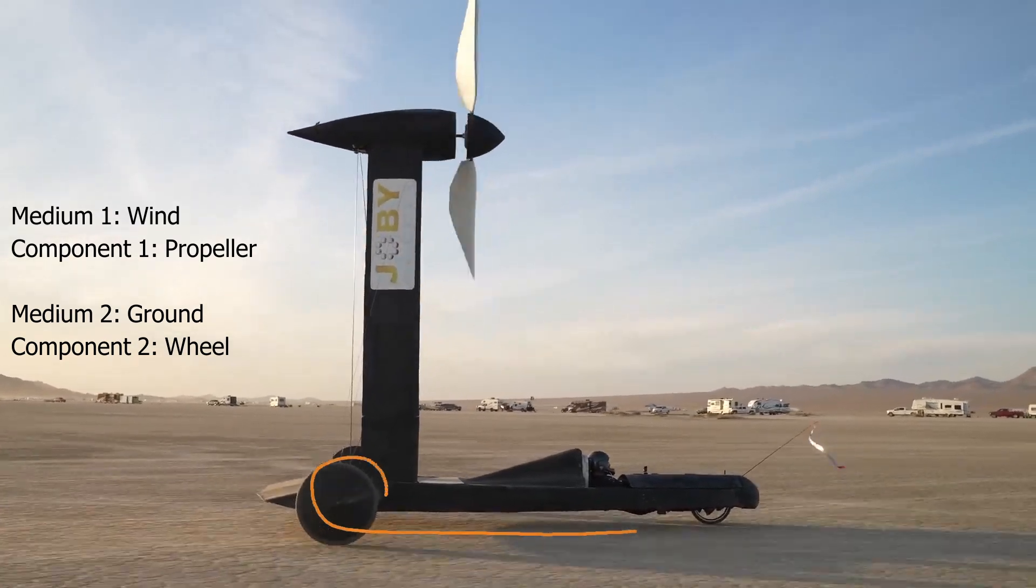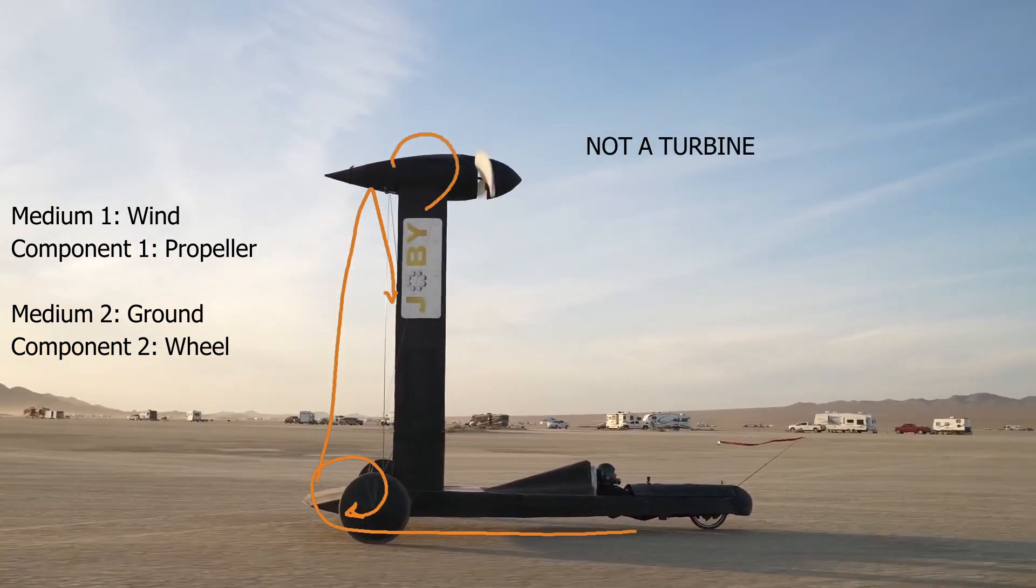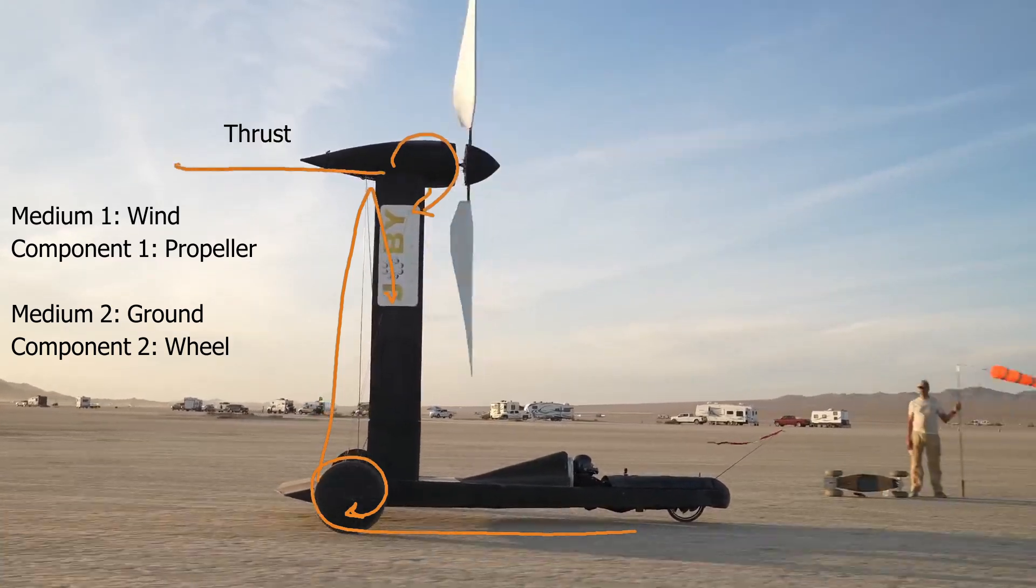Here the wheels interface with the ground and the propeller interfaces with the wind. The wheel spinning turns the propeller. Propellers are hard to understand, so let's simplify the system.